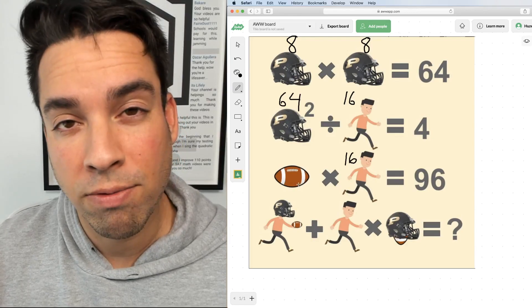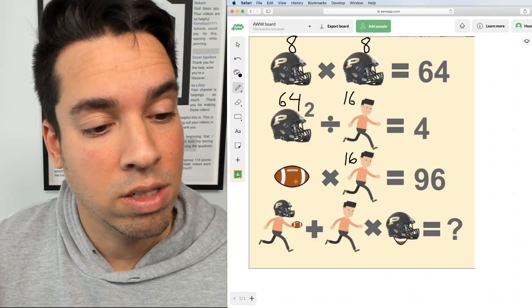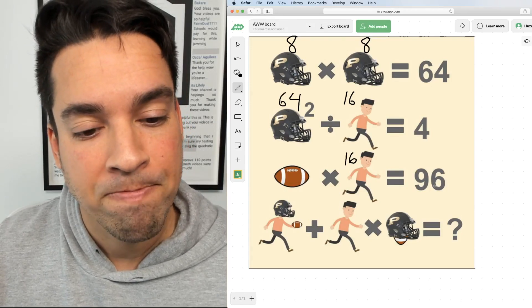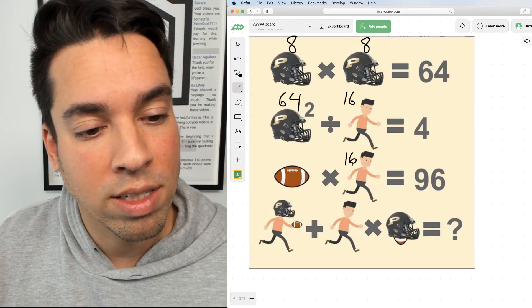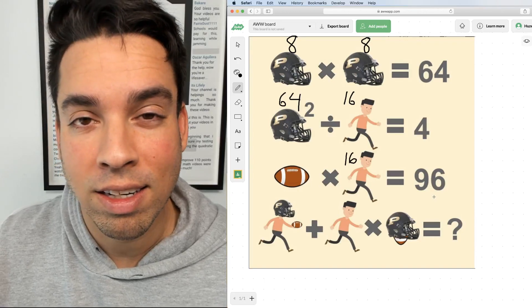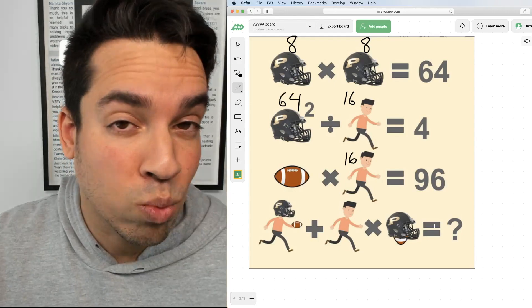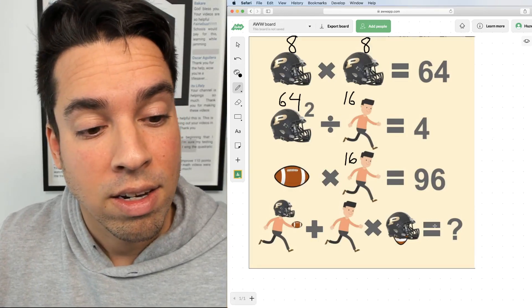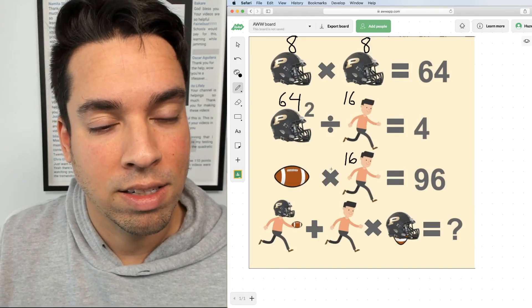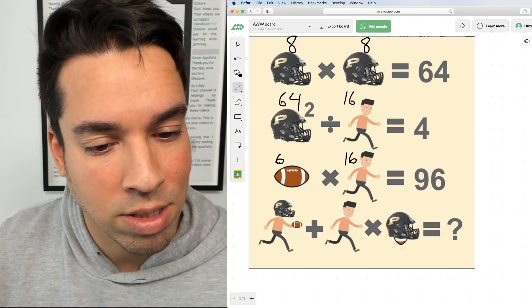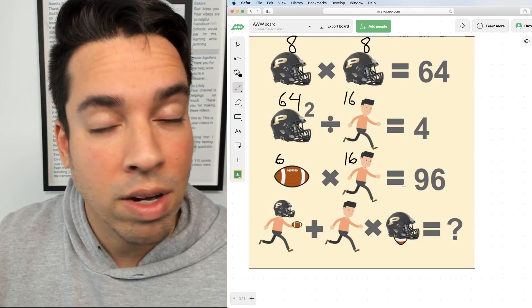Next we come to the football. We're trying to figure out what that value is. The football times 16 gives me 96. So the question we're going to ask is what times 16 gives me 96, or alternatively 96 divided by 16 gives me what. 96 divided by 16 is of course 6, and that works: 6 times 16 gives me 96. Now we've got all the components.